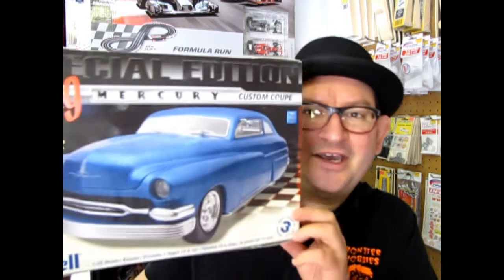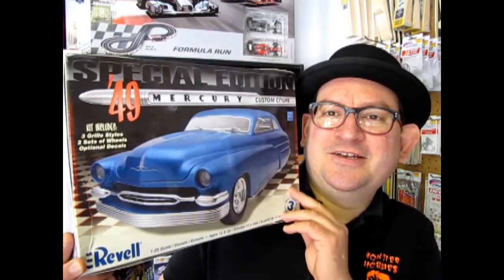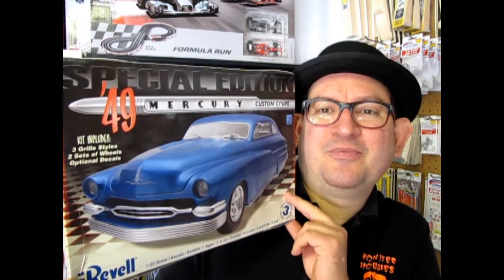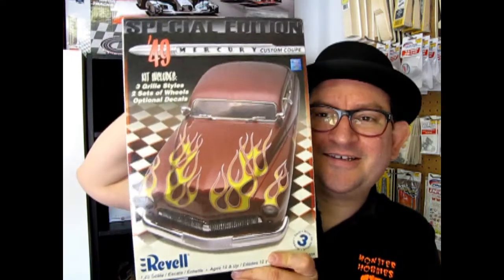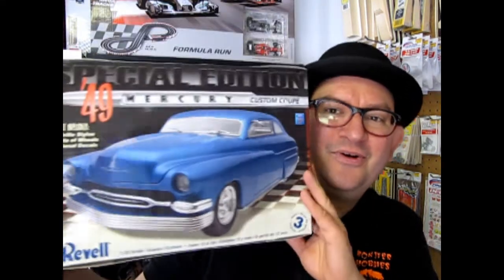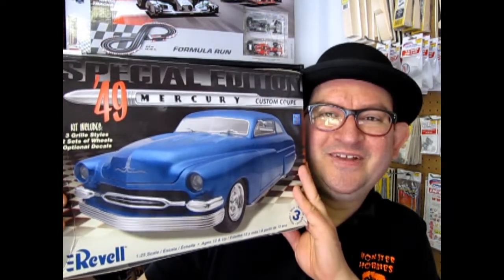And tonight we're going to look at Revell's Custom 1949 Mercury Kit. Now wait a minute, you're saying, hey, he held up a different box at the beginning of this. Well, there it is. Yes, double-sided so you can stack it tall on the shelf or cross on the shelf. But either way, the same model is inside the box, so let's go down and open the lid on this baby.